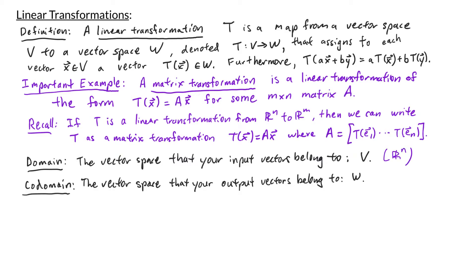The codomain is the vector space that your outputs belong to. In a linear transformation from V to W, W would be your codomain. If you're working with a matrix transformation and the matrix A is an M by N matrix, then your codomain is Rm.